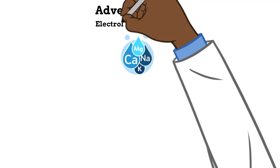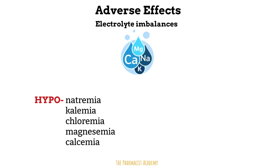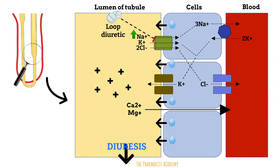Let's start with the electrolyte imbalances. We have hyponatremia or low sodium, hypokalemia or low potassium, hypochloremia or low chloride, hypomagnesemia or low magnesium, and lastly hypocalcemia or low calcium. These side effects are all due to the mechanism of action of these agents. The decrease in sodium, potassium, and chloride should be easy because we know loop diuretics inhibit the sodium-potassium chloride co-transporter. This causes sodium, potassium, and chloride to stay in the tubule lumen and not enter the cells and then the blood, so that is why we excrete most of it.